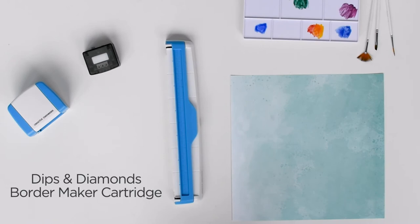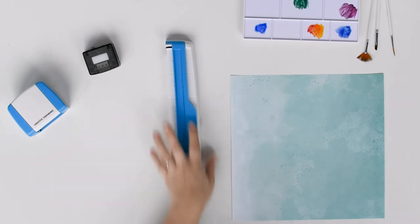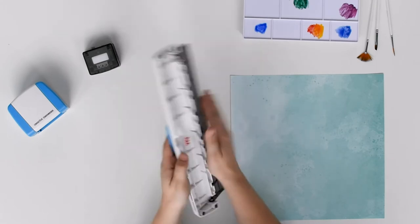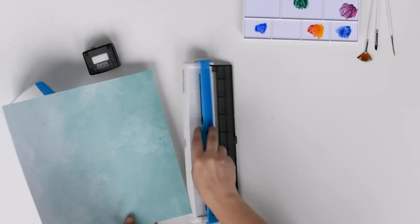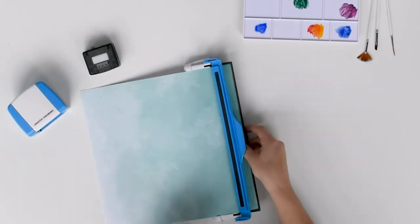It's easier than ever to make beautiful borders with the Creative Memories border maker system. With the bottom tray of the guide flipped out and clicked in place, lift up the blue arm and slide the paper under until it aligns with the edge of the tray.